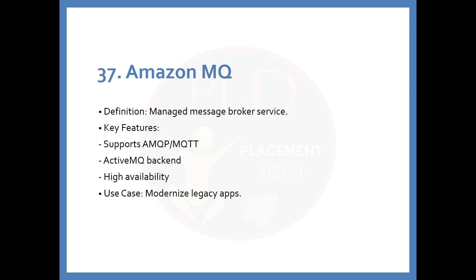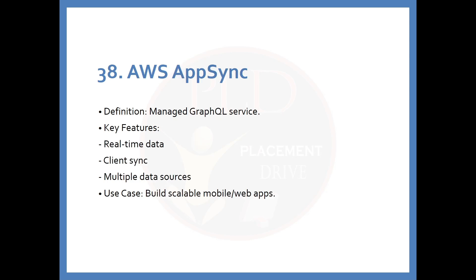The 37th service is Amazon MQ. The definition is: a managed message broker service. Key features include support for AMQP/MQTT protocols, an ActiveMQ backend, and high availability. The use case is modernizing legacy apps. The 38th service is AWS AppSync. The definition is: a managed GraphQL service. Key features include real-time data, client sync, and multiple data sources. The use case is building scalable mobile or web apps.